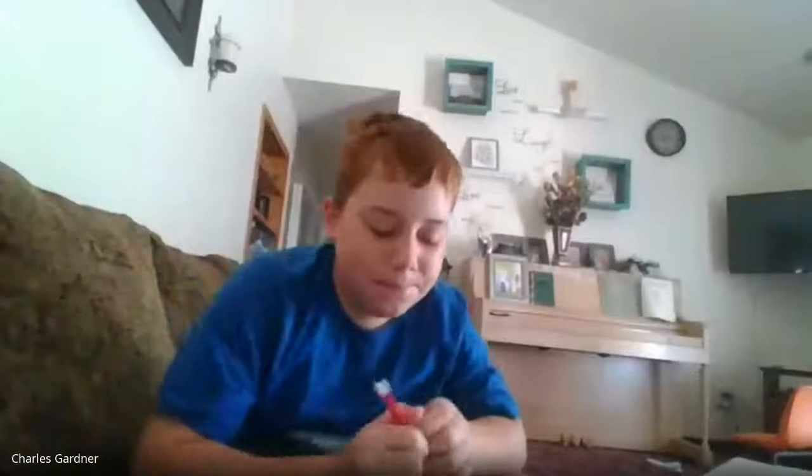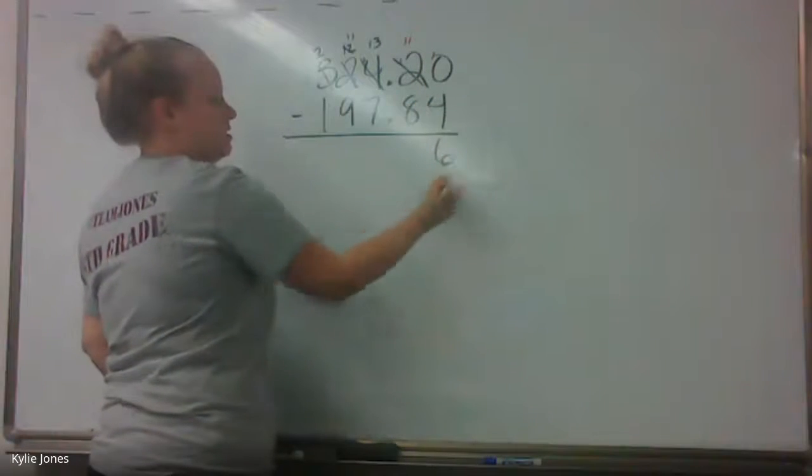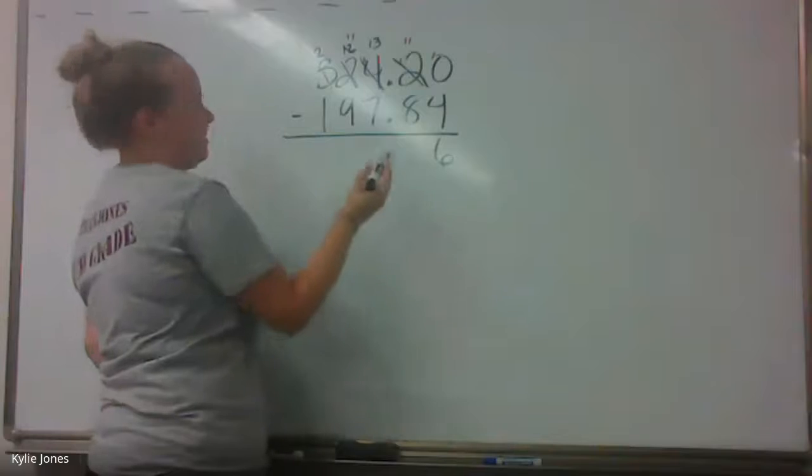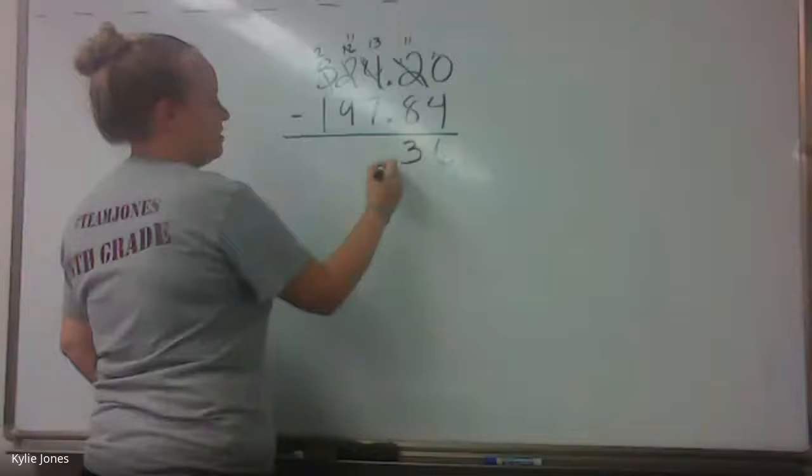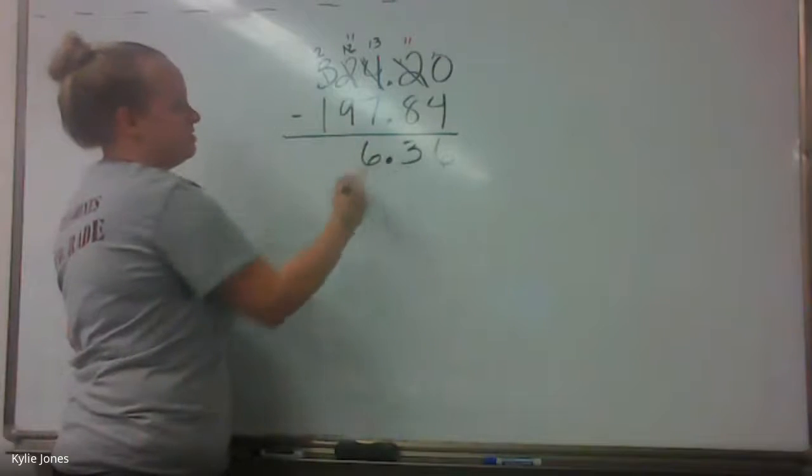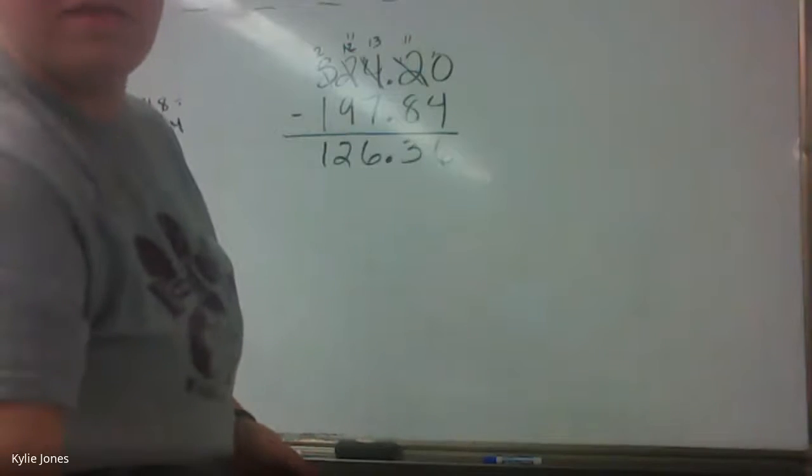Does that look good to you guys? Yeah. Good. Alright. So then we have 10 minus 4 is 6. 11 minus 8 is 3. Drop down our decimal. Good. 13 minus 7 is 6. 11 minus 9 is 2. And 2 minus 1 is 1. So good.